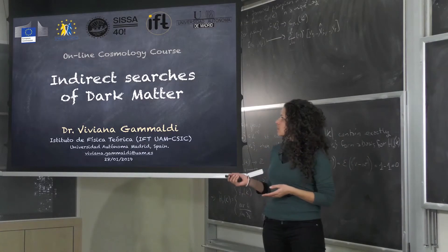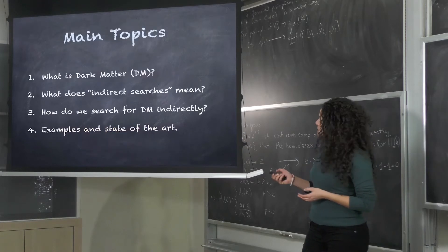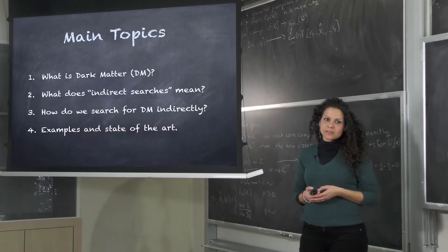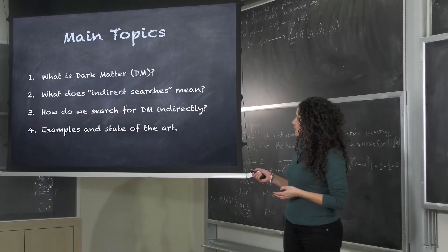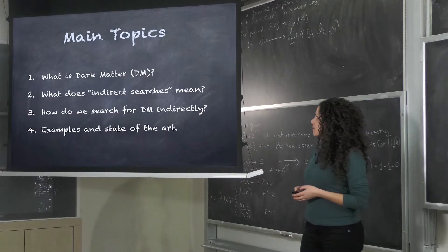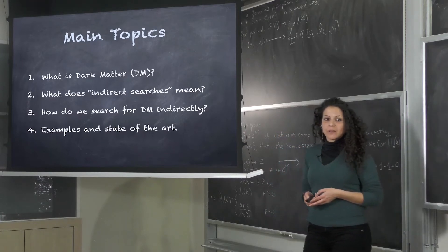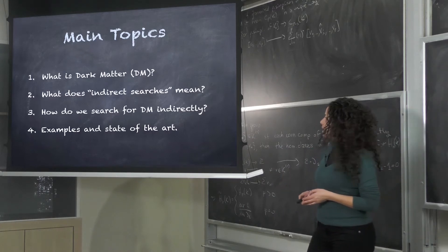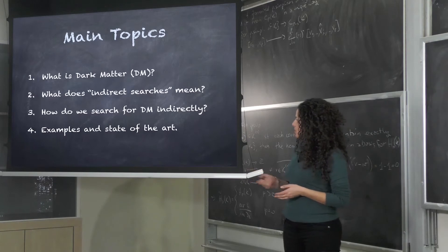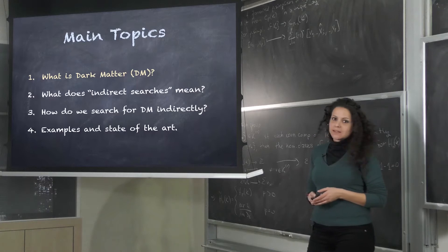Today my lesson is about indirect searches of dark matter. These are the main topics of this lesson: I will briefly introduce what dark matter is, then explain what indirect searches mean, go into the details of how we search for dark matter indirectly, and conclude with some examples and the state of the art of this research area. So let's start with what is dark matter.